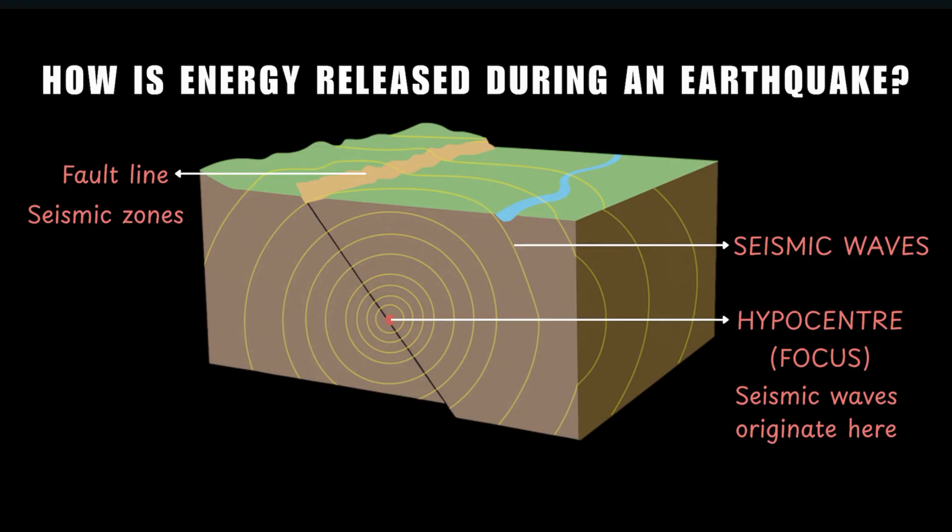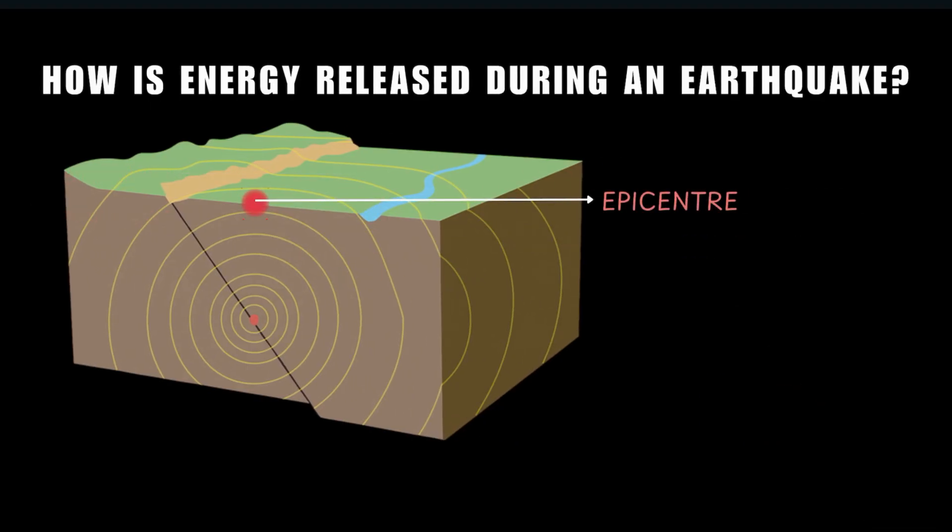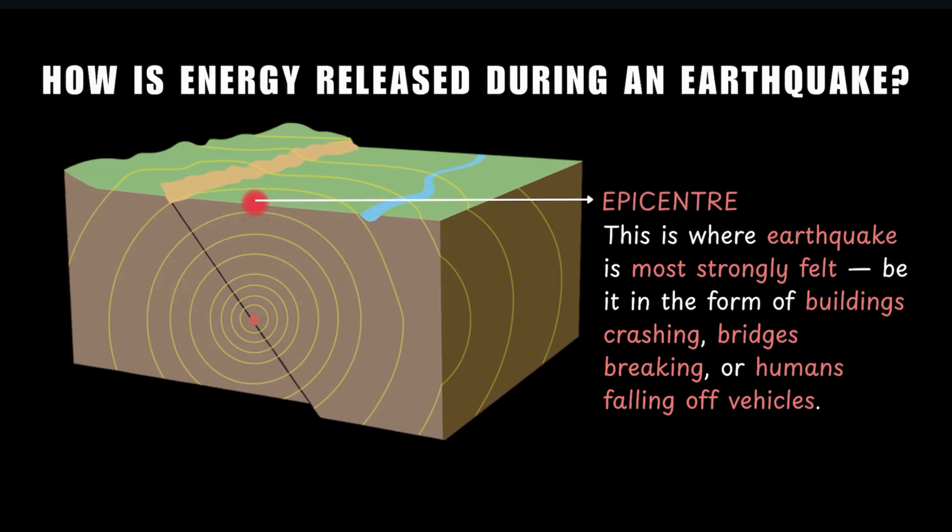As you can see, from the hypocenter, the waves radiate outward in all directions. The spot on the surface where seismic waves first reach is called the epicenter. It is where the impact of the earthquake is most strongly felt, in the form of buildings crashing, bridges breaking, or humans falling off vehicles and so on and so forth.